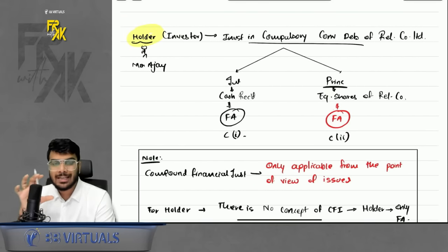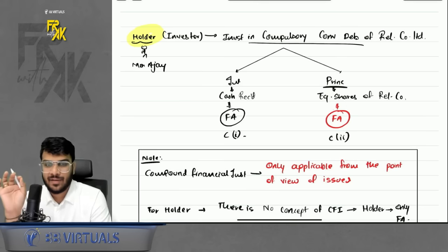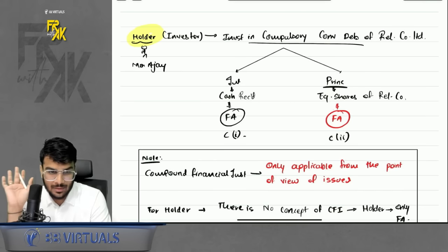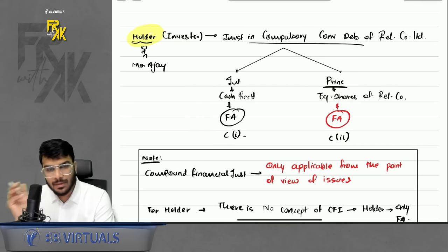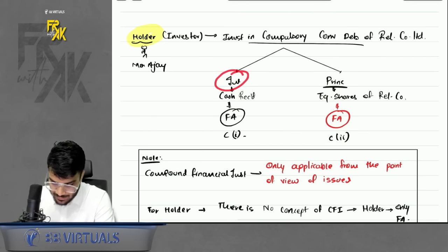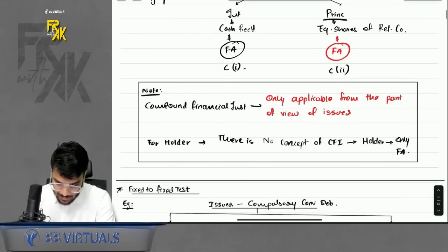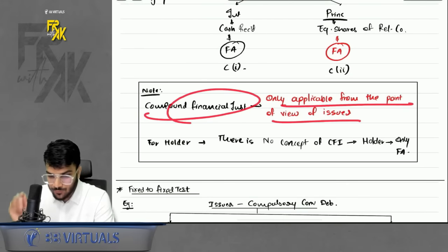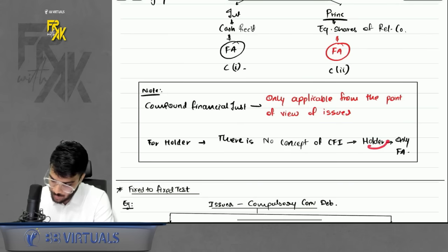One important point: the concept of CFI is only from the point of view of the issuer. For the holder — the investor — there is no concept of CFI. Whatever the investor receives, whether cash or equity shares of that company, both are financial assets for the investor. The concept of CFI is only applicable from the point of view of the issuer.